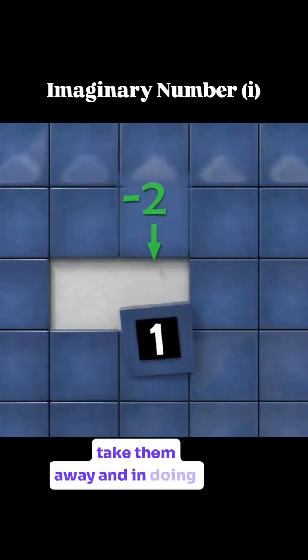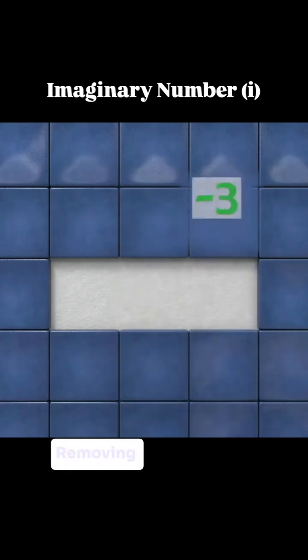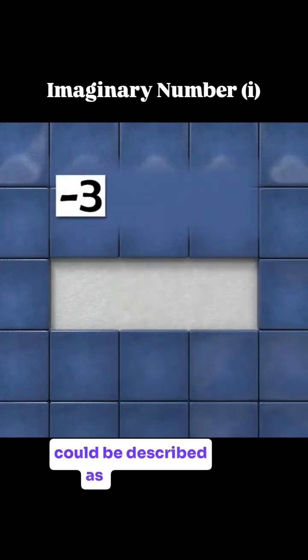As opposed to adding on more squares, we could also repeatedly take them away, and in doing so create a growing hole. Removing a square 3 times could be described as negative 3 times 1, which gives us negative 3.